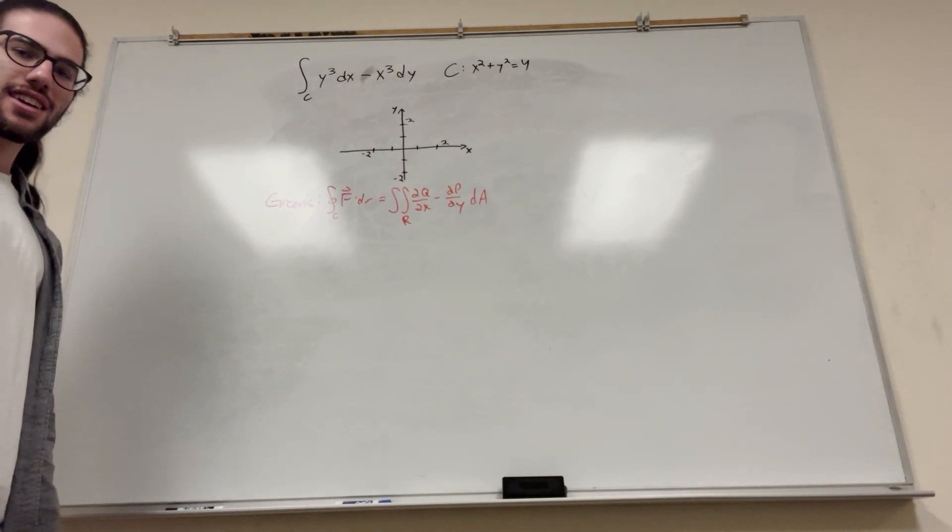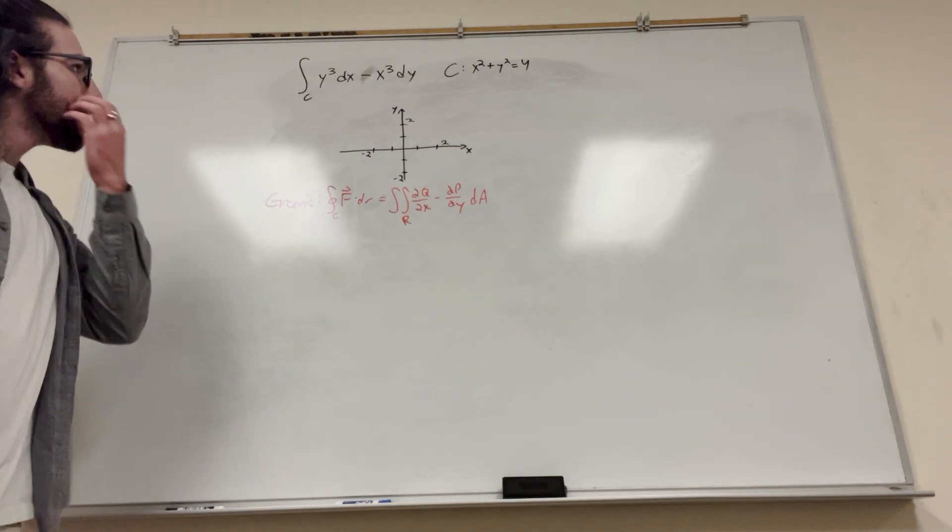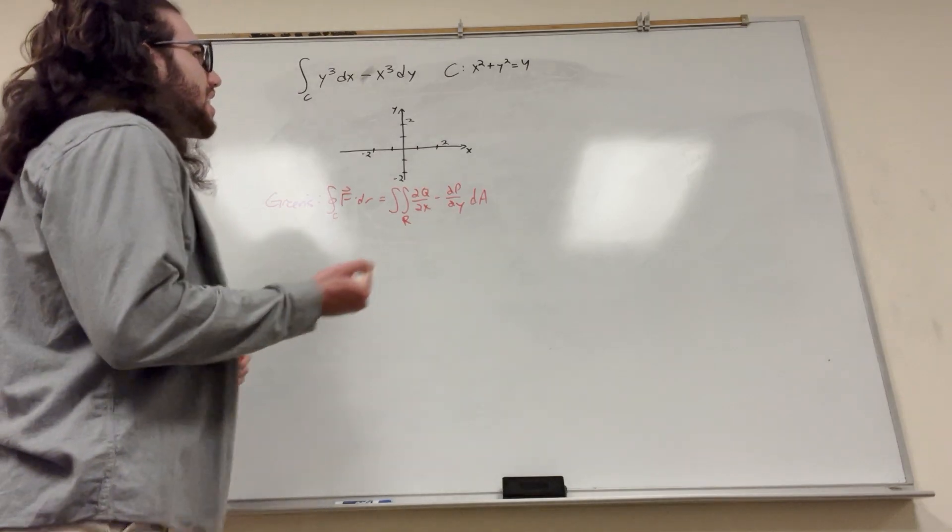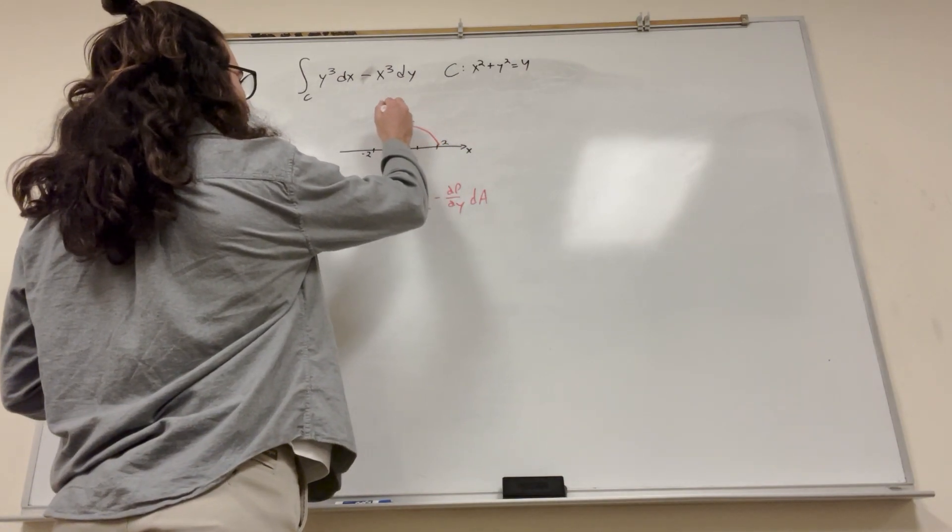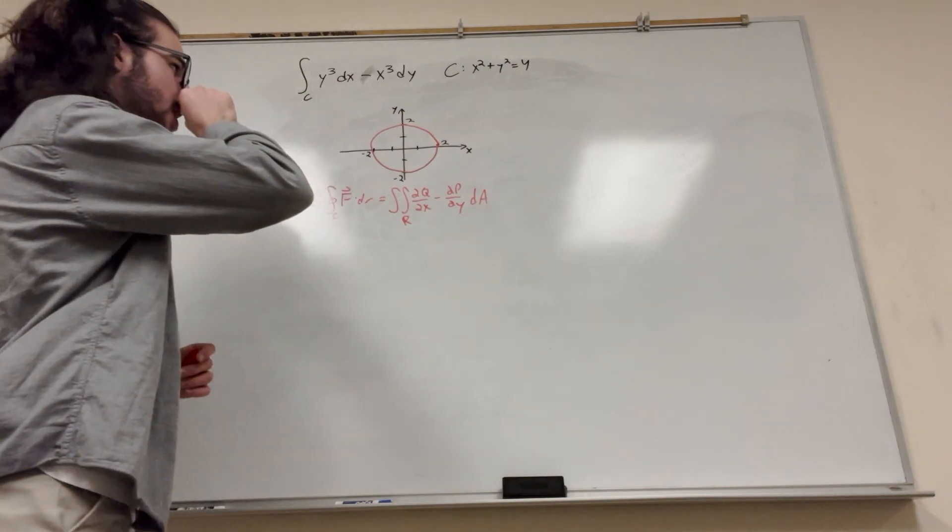First thing, we're in a Green's Theorem section. We're going to do Green's Theorem. So let's first check that Green's Theorem works. Let's graph our line. x squared plus y squared equals 4. That's a circle with radius 2. I hope you know that by now, otherwise you might be struggling with calculus 3 a little bit.